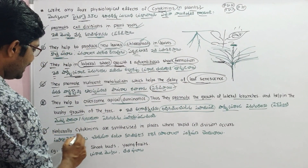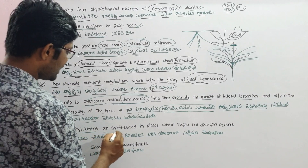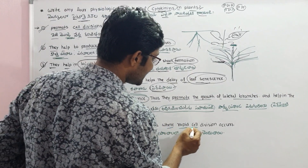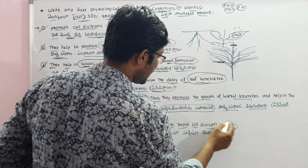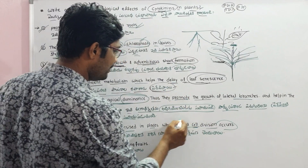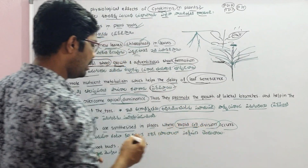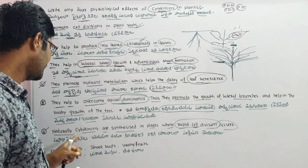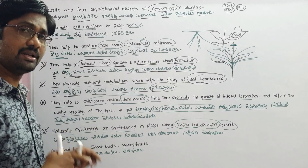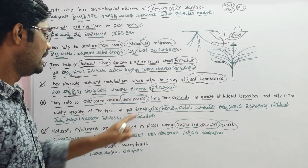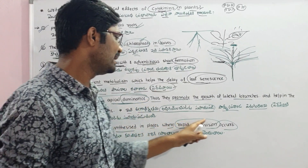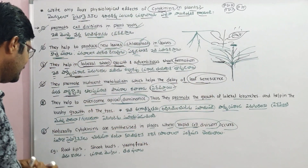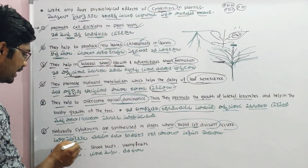Naturally, cytokinins are synthesized in places where rapid cell divisions occur. If there are rapid cell divisions in a region of the plant, natural cytokinins will be produced there.